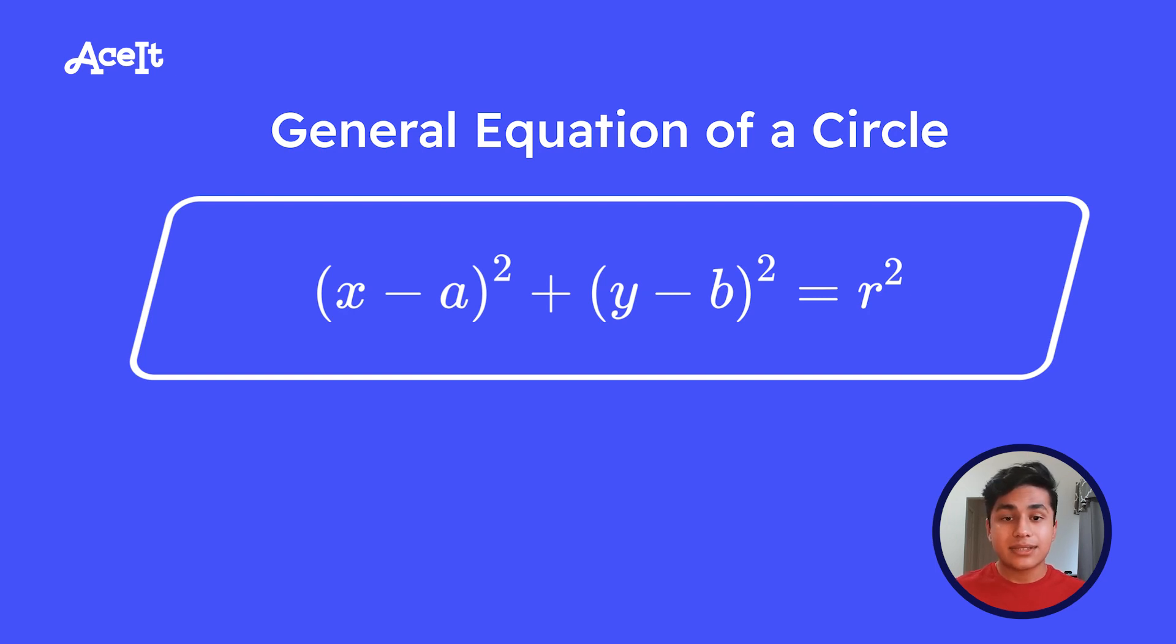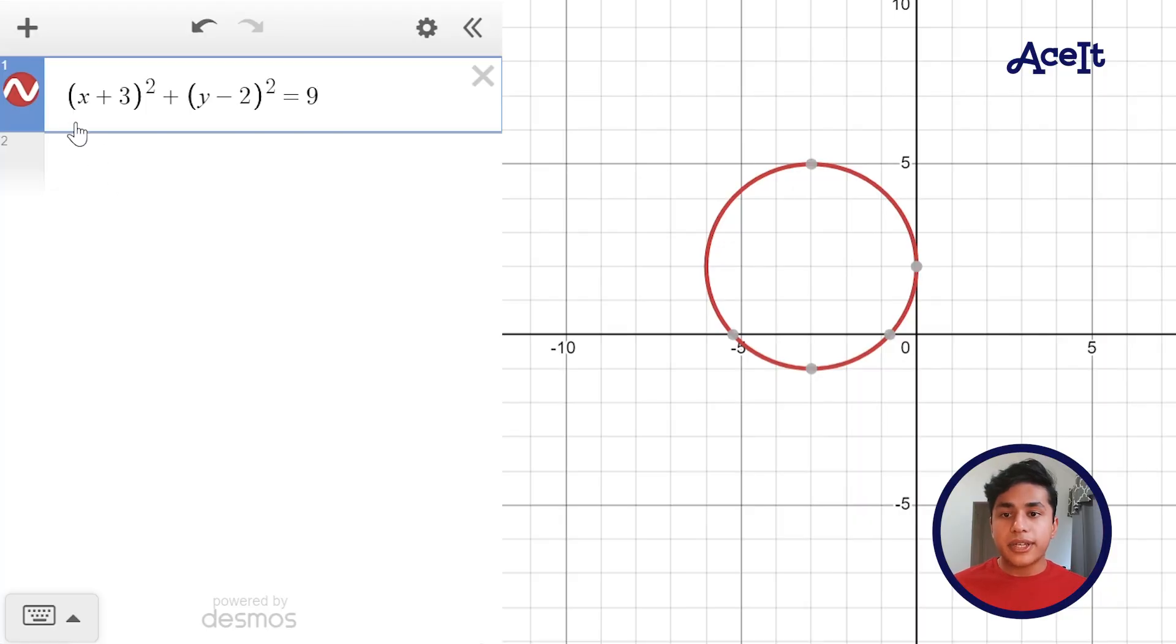Let's help visualize this. Starting off here, we got (x + 3)² + (y - 2)² = 9. You'll see here that the center of the circle is translated 1, 2, 3 units to the left, and it's translated 1, 2 units up from the origin. In regards to that 9, based on the equation, it should be the radius squared. And that checks out because 1, 2, 3, the radius is 3, and 3 squared is 9.